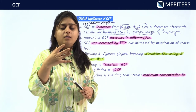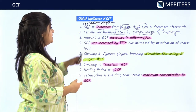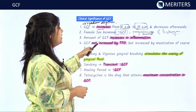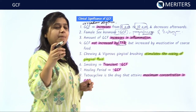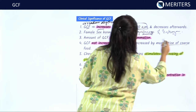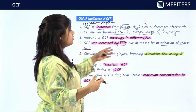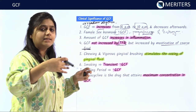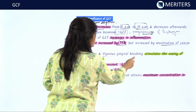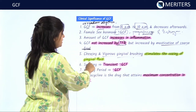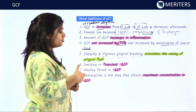GCF is not increased by toothbrushing alone, but it is increased by mastication of coarse fibrous foods like salads or green leafy vegetables, which leads to irritation of the gingiva and ultimately increases secretion of GCF. Chewing and vigorous gingival brushing stimulates the oozing of gingival crevicular fluid from the gingival sulcus, also due to irritation of the gingiva.